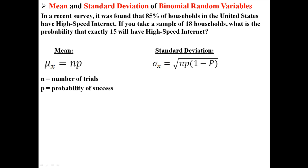N is the number of trials, in this case the 18 trials because there are 18 households, and P is the probability of success. In this case the probability of success is 0.85 or 85% because 85% of the households have high-speed internet.